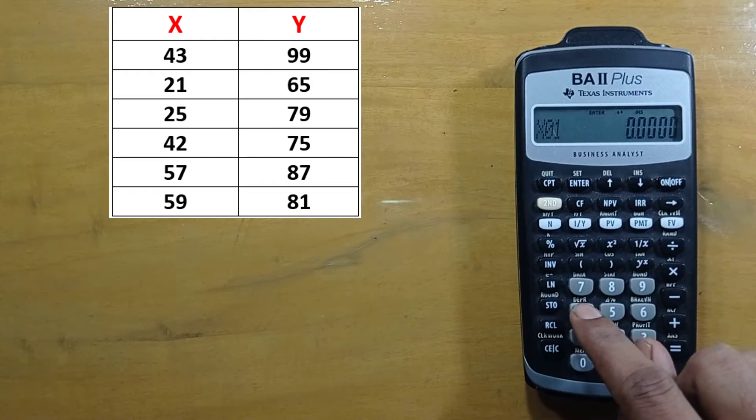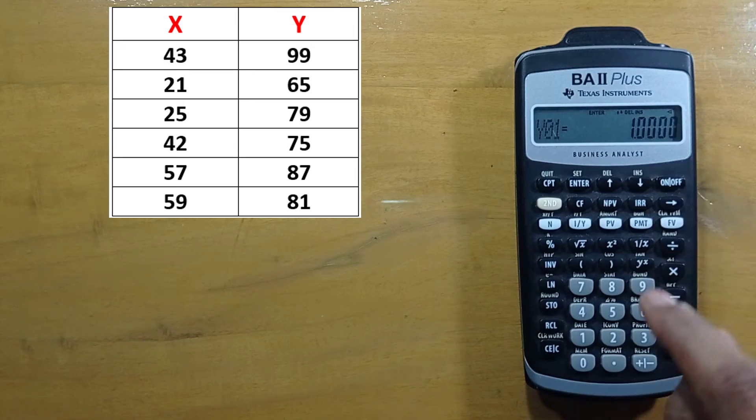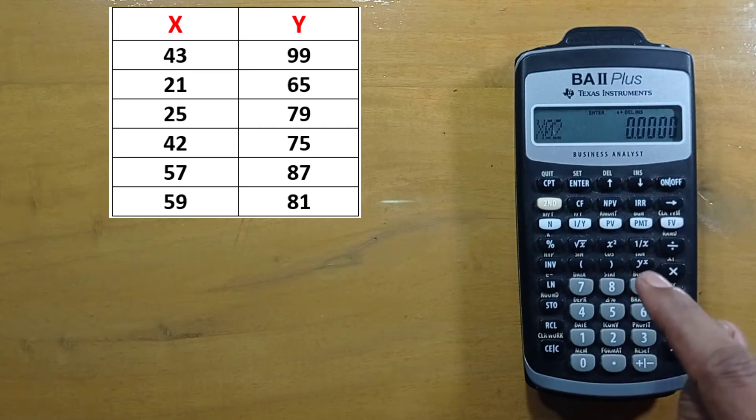Now we will enter values: 43, enter, then scroll down, 99, enter, scroll down.